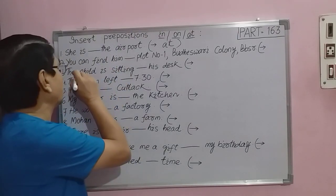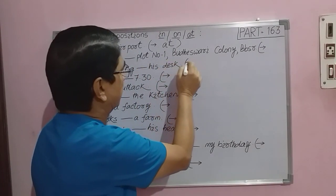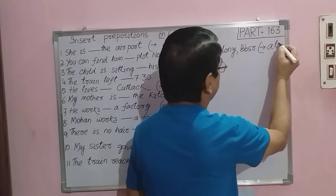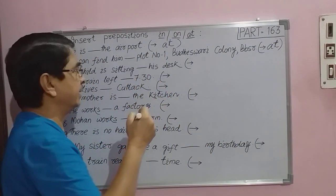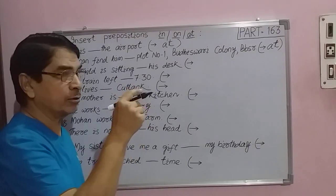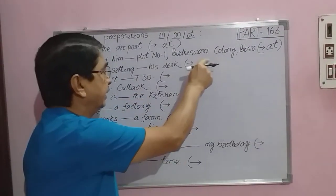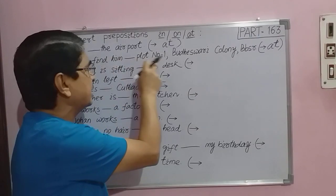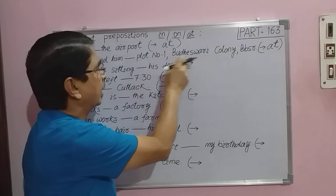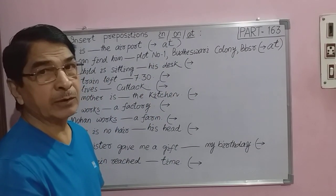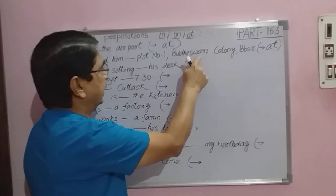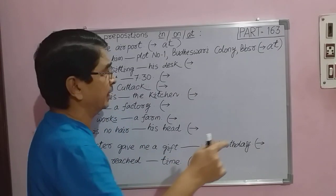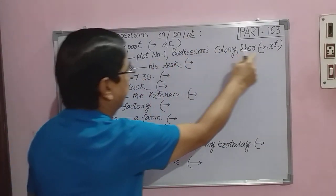Question number two: You can find him ___ flat number one, Buddheswari Colony, Bhubaneswar. Here the preposition AT is used. When there is an address — a specific point of a place — we use AT. He lives at flat number one, Buddheswari Colony, Bhubaneswar. If it were just the place name, we would use IN Bhubaneswar, but since there is a specific address, we use AT.